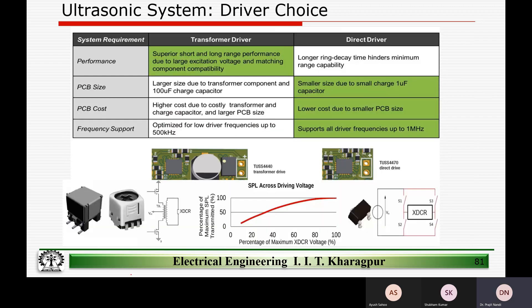The driver choice: a closed top needs a transformer driver, and an open top can be driven with a direct driver. A closed top needs a transformer because, being inside a package, higher drive is required for sound waves to propagate outside. Superior short- and longer-range performance comes from the large excitation voltage and matching component compatibility. A longer ring decay time hinders minimum range capability — this is where the blind zone concept comes in.